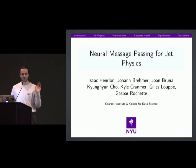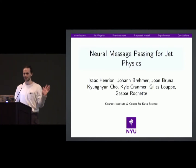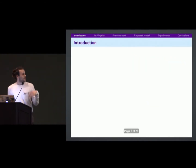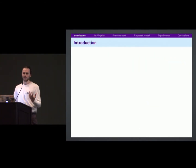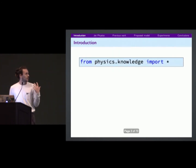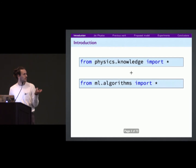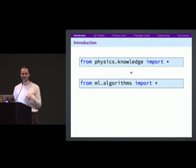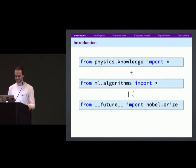Just to preface this — I'm not a physicist, so if I butcher the physics, please go easy on me. The basic idea is that we want to combine both physics knowledge and machine learning ideas: import physics knowledge, some algorithms, and see where it takes us.